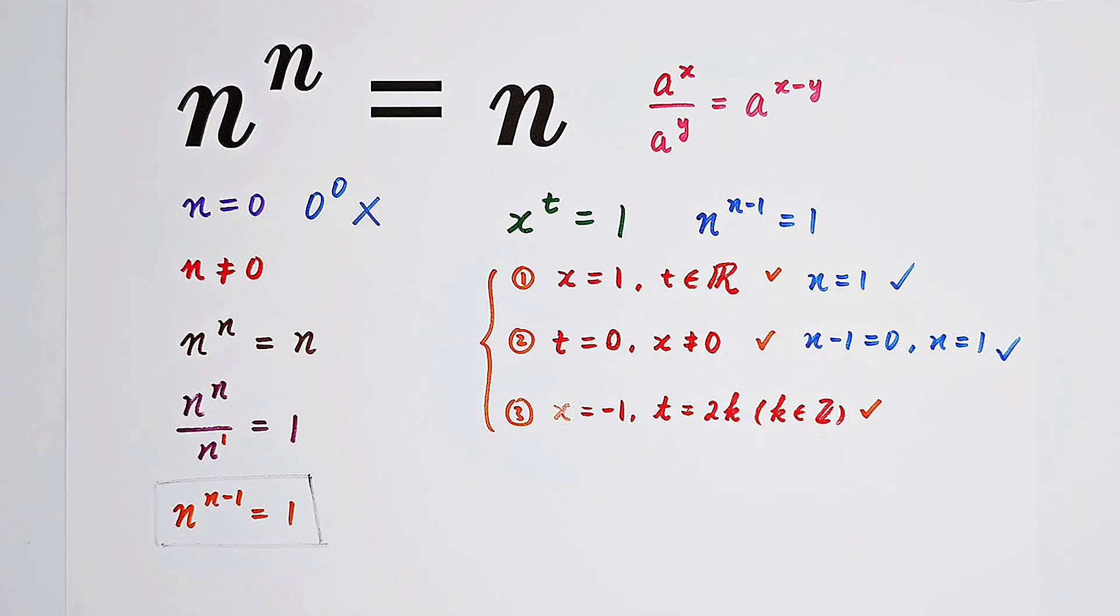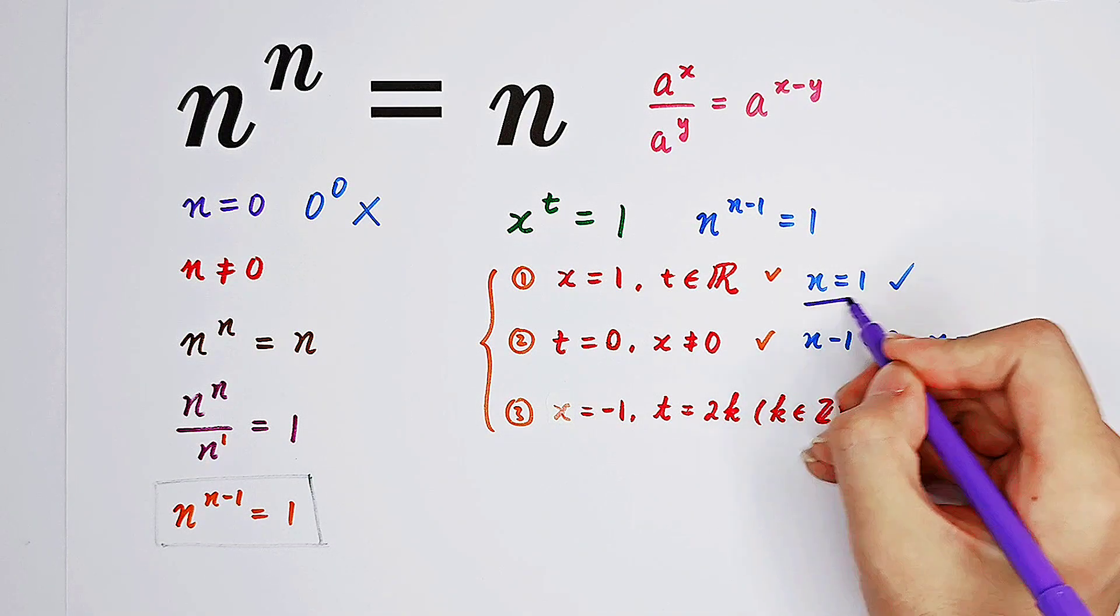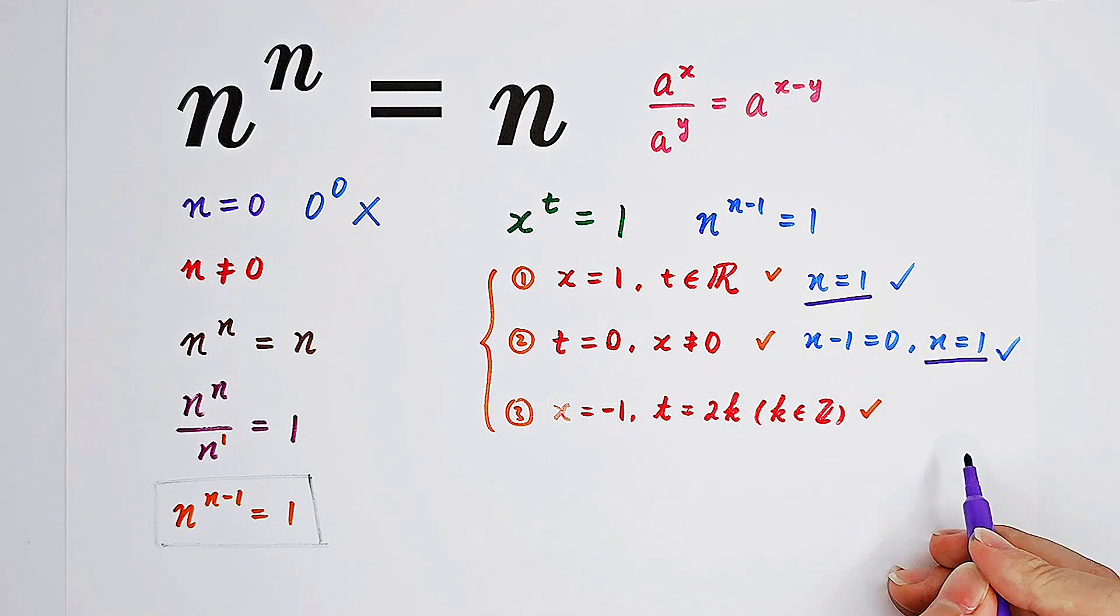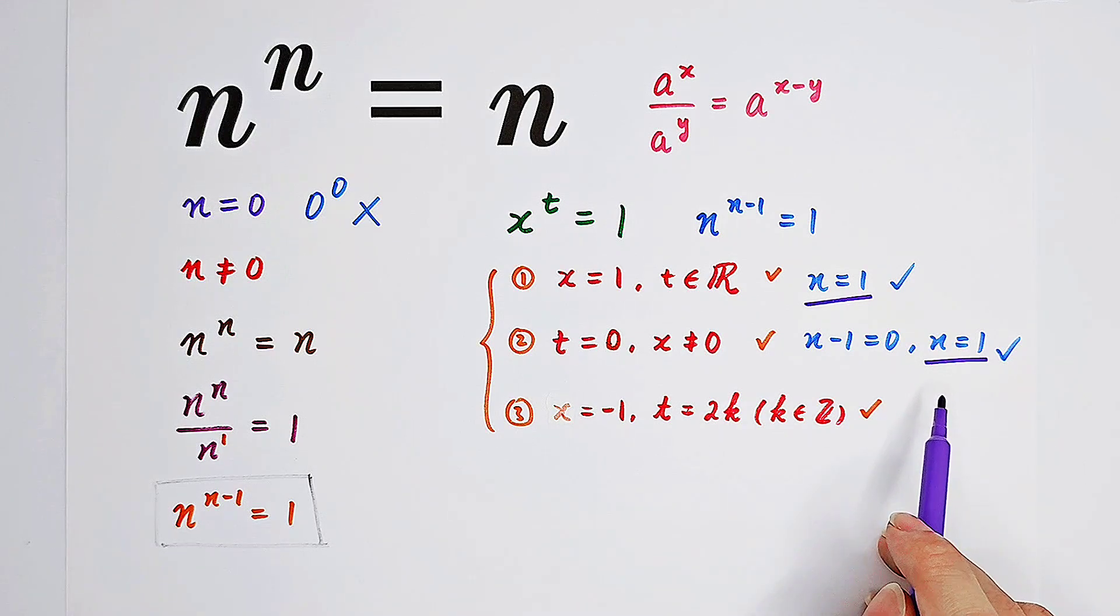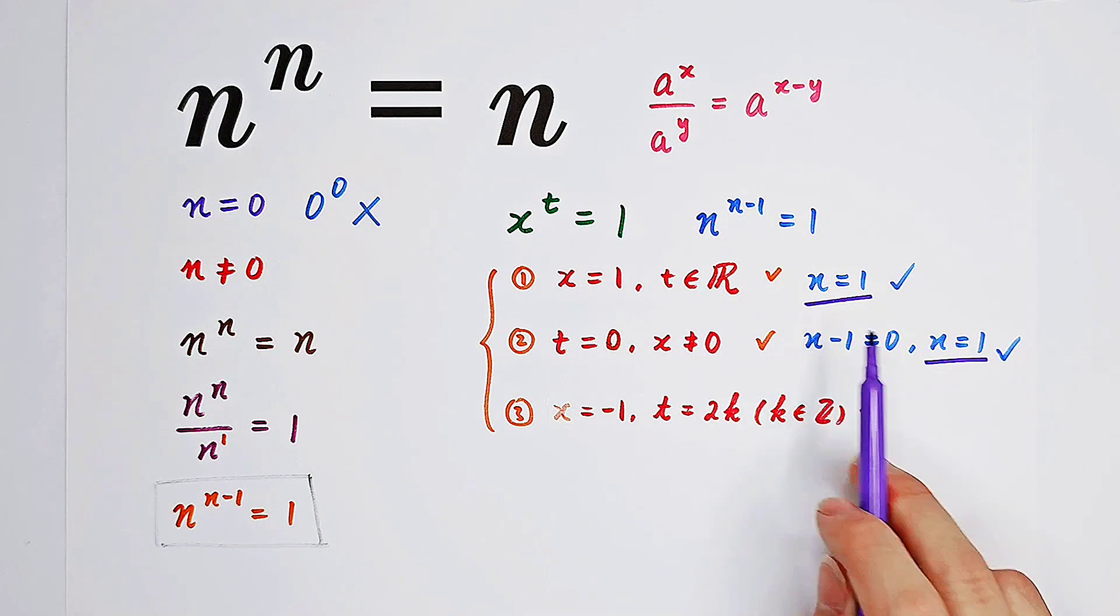However, you can find out that the first two cases provide us with the same solution, n equals 1. So we just write once, n equals 1.